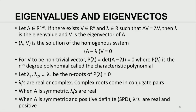We have earlier seen that one of the conditions necessary for the existence of a solution of a homogeneous system is that the system must be singular. Here, the system matrix is A minus lambda I, and the determinant of A minus lambda I must be zero. Since the elements of A and I are known and lambda is a variable, this becomes a polynomial of degree n. This polynomial p(lambda), which is the determinant of A minus lambda I, is called the characteristic polynomial.